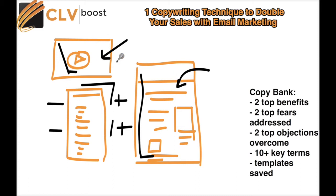Marshal those resources together and then aim to build the following copy bank. Just looking at this — not thinking about your own intuition, not making guesses, not looking at a survey you sent to your list six months ago — just looking at your most successful and least successful open rates, click-throughs, and highest conversion rates on video and long-form sales material.